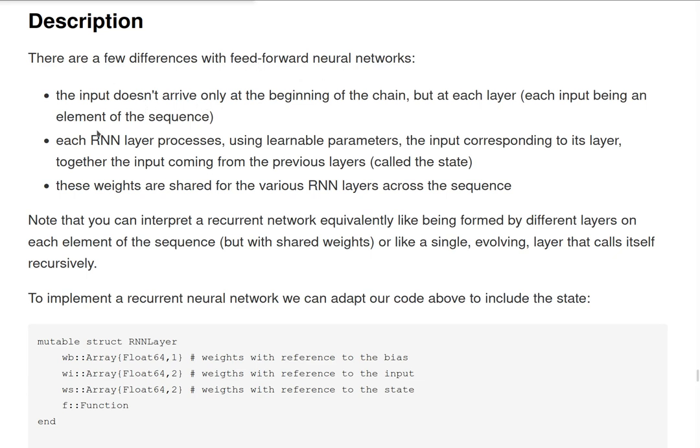There are a few differences in this kind of architectures compared with what we saw earlier. The most important one is that the input here doesn't arrive only at the beginning of the chain like in a feedforward neural network, but at each layer it will arrive an element of the sequence. And each layer of this recursive neural network processes two things: the input coming from the previous layers, which here we call the state that is somehow similar to what we saw earlier in feedforward neural networks, together with the input corresponding to its specific layer, the nth element of the sequence.